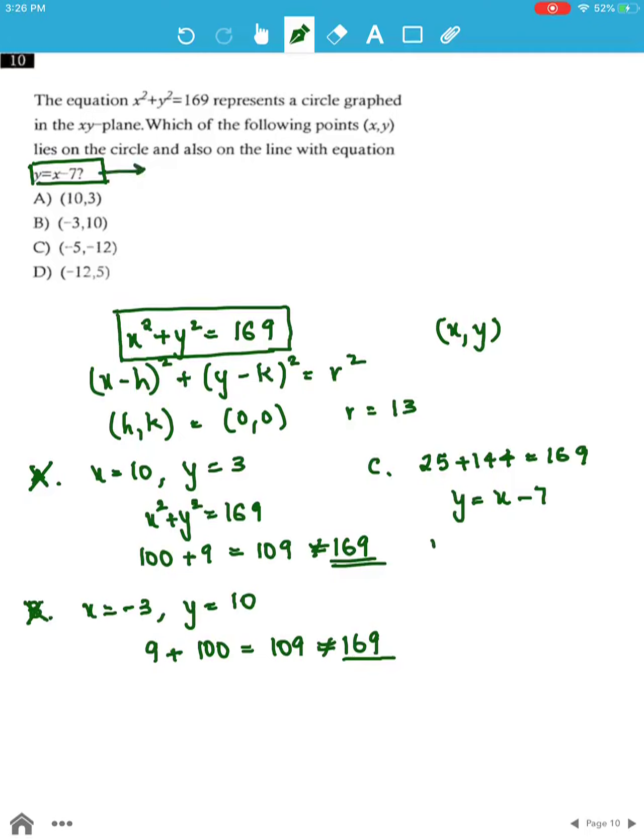When we plug in x as -5, y should be -12. So -5 minus 7 equals -12, which equals y. Therefore this point lies on the circle and satisfies the equation.